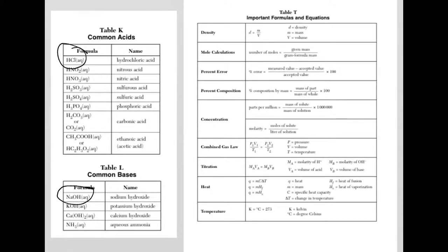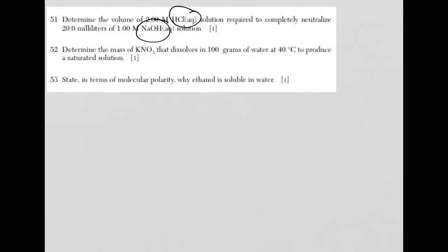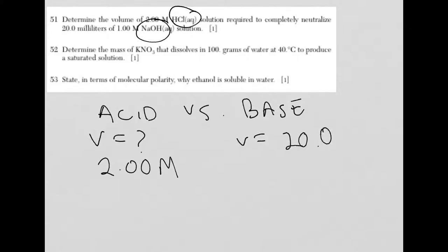When I have an acid versus a base, if I go back to the question for a minute, look at the information that's given. For HCl, I want to know the volume, so I'm looking for volume. I have a concentration of 2.00 molar. For the base, I have a volume of 20 milliliters and a concentration of 1.00 molar.